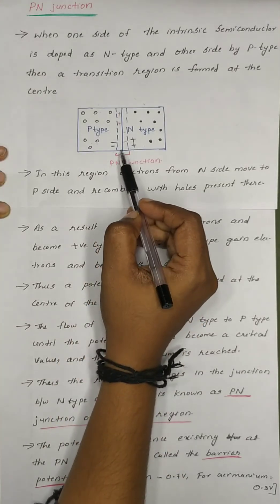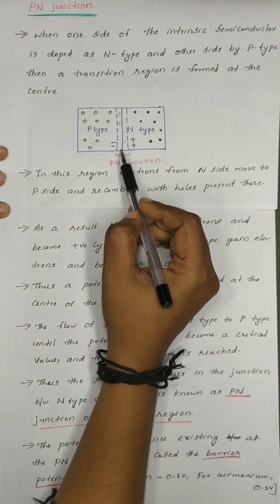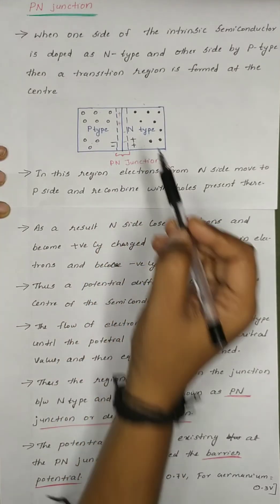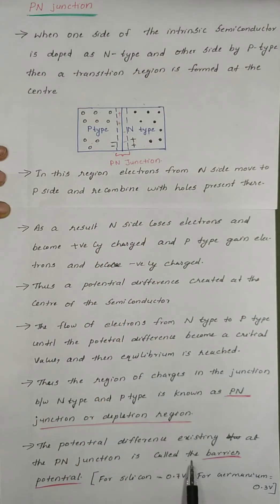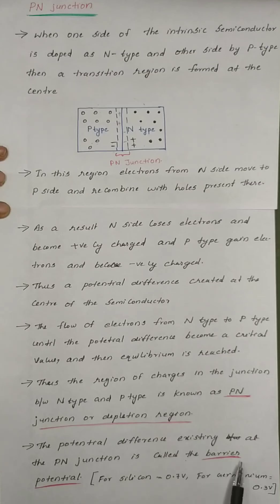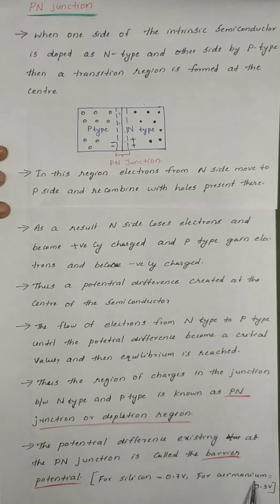What is the potential difference at this P-N junction? We call it the barrier potential. The barrier potential for silicon is 0.7V, and the barrier potential for germanium is 0.3V.